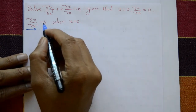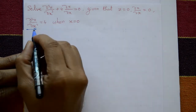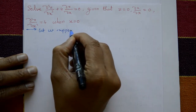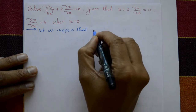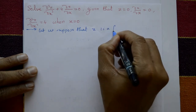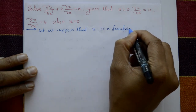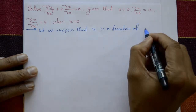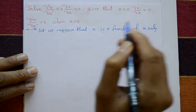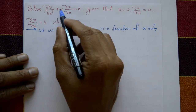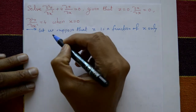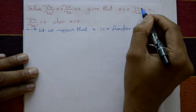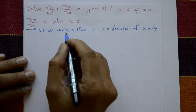There is only one independent variable, x. We suppose that z is a function of x only. The approach: first convert the PDE to an ODE, find the roots, write the complementary function, convert back to PDE, and use the conditions to get the solution.